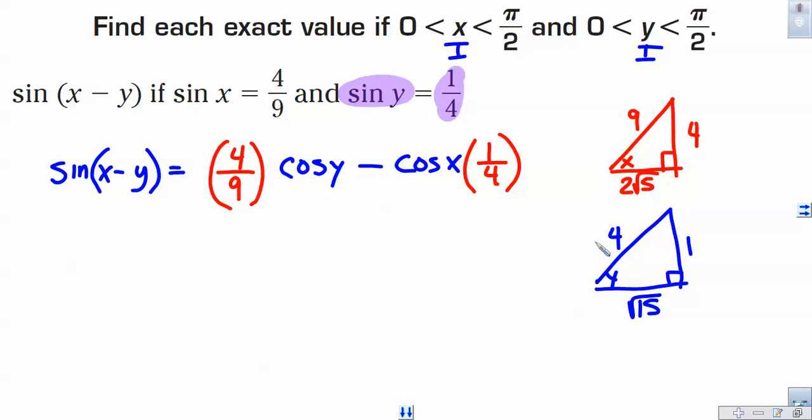So now we can fill in the cosine for each one of those. Let's do that right now. Cosine of y, remember y is down here, the blue triangle. Cosine, adjacent over hypotenuse, so we have square root 15 over 4. Cosine of x, red triangle there. Cosine of x would be 2 square roots of 5 over 9.